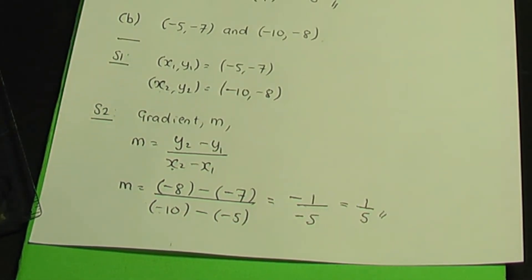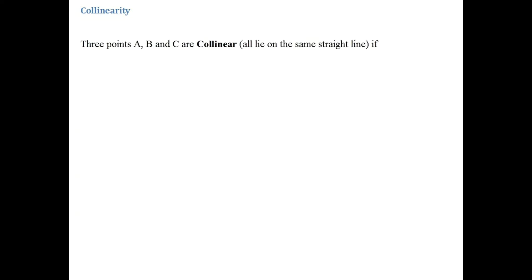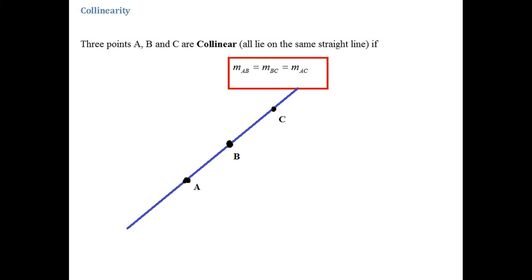So the gradient for part B is 1/5. Now using the concept of gradients, let me discuss collinearity. Three points A, B and C are collinear — meaning they all form a straight line — if the gradient of AB equals the gradient of BC, which equals the gradient of AC. They all lie on a straight line if that condition is true.